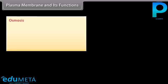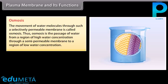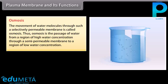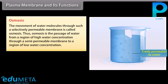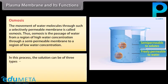Osmosis: The movement of water molecules through a selectively permeable membrane is called osmosis. Osmosis is the passage of water from a region of high water concentration through a semi-permeable membrane to a region of low water concentration. In this process, the solution can be of three types.